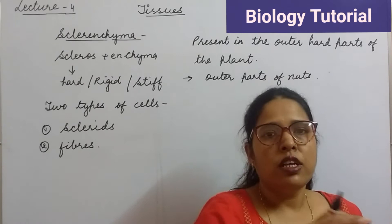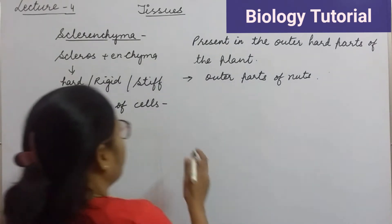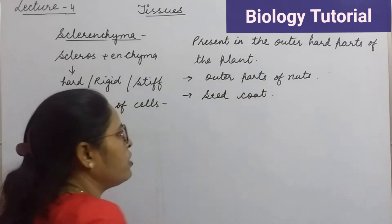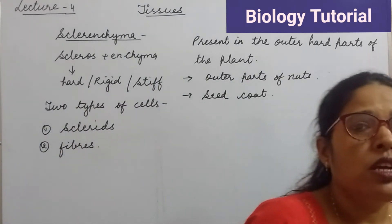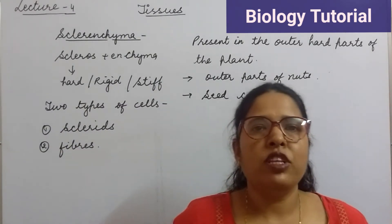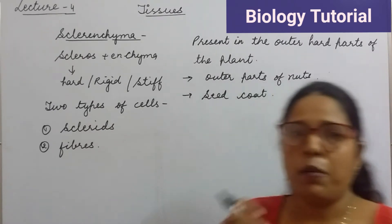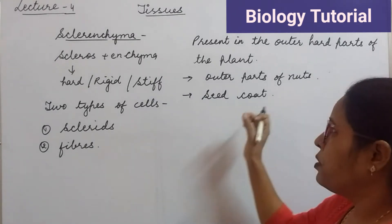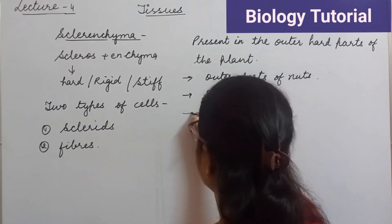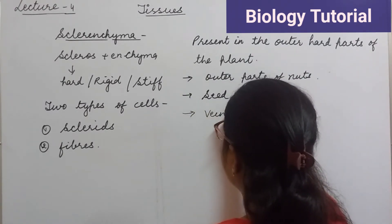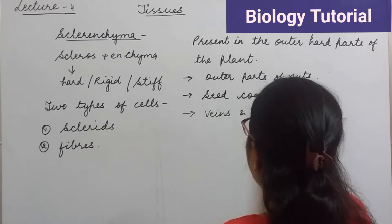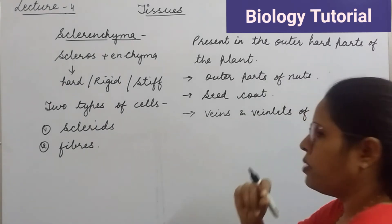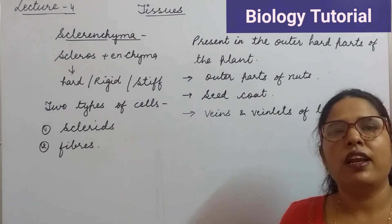To protect the soft fruit, a hard coating is present outside of the nuts. This seed coat is also made up of sclerenchyma tissues. Sclerenchyma tissues are also present in the veins and veinlets of leaves. If we look at leaf structure, we see a midrib in the center, and then the veins and veinlets are present.